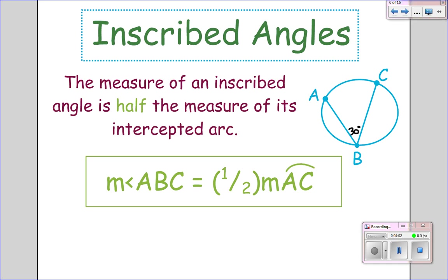So if this were to be 30, then this right here would be 60. Because 30 is half of 60. This is very important that you understand this theorem. That the inscribed angle will always be half of the arc it intercepts.